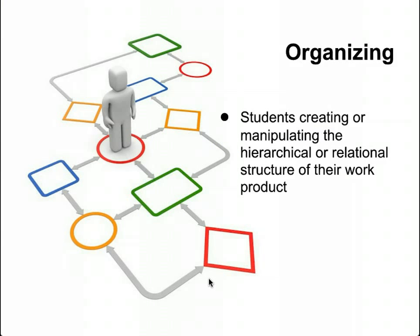Then students organize. This is a bit of the reflective piece — they start to look at the structure, the relational and hierarchical structure of their work product, and figure out how it all fits together. Hypothetically, they may have five or six YouTube clips, two or three audio clips, ten images, and several textual pieces that they're adding to a group website. Now they need to start to organize: they have some content and the road map, and they need to manipulate the relational structure to figure out if it really fits the overall end result they're looking for.